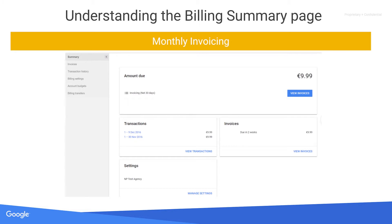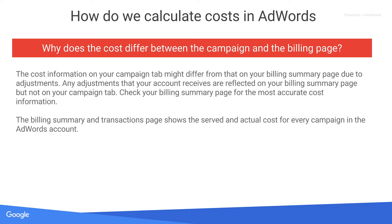You may notice at times that the campaign activity amount mentioned in the transaction history would be different from the costs mentioned for the same date in your AdWords campaign reporting. This is because any adjustments that your account receives are reflected on your billing summary page but not in your campaign tab. Furthermore, your costs in the campaign tab will show the total cost of all the AdWords ads which were served, known as your served cost.